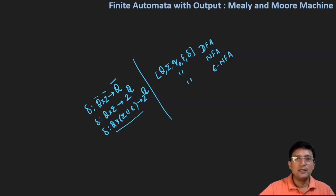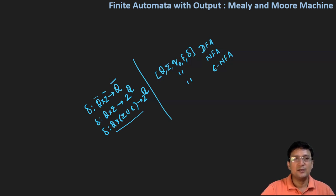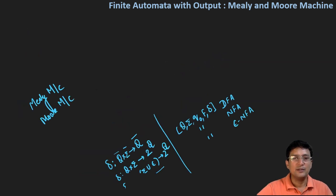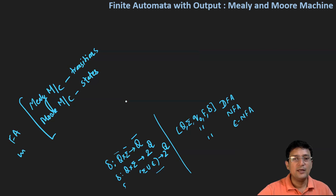In the automata we have studied so far, there is no output associated with the states. But there are automata wherein the outputs are associated with the state and with the machine. There are two such machines: one is the Mealy machine, and the other one is the Moore machine. In the Mealy machine, the output is associated with the transitions. And in the Moore machine, the outputs are associated with the states. These are the two automata, or finite automata with output. DFA, NFA, and epsilon NFA are the finite automata without output.